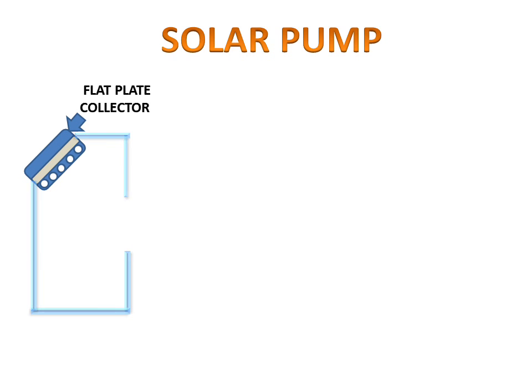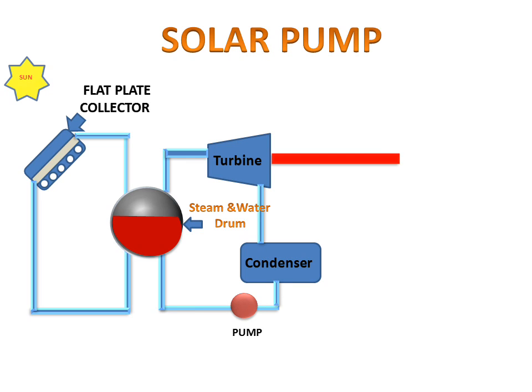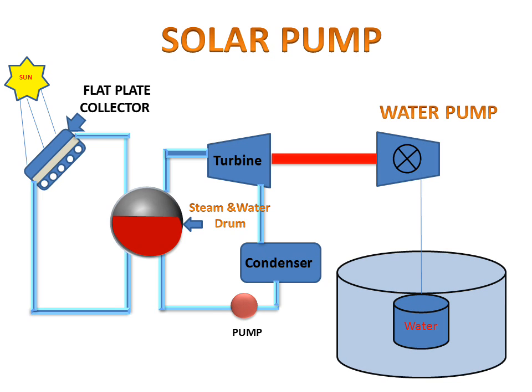We have a flat plate collector and connected pipes with a steam and water drum. Turbine, condenser, pump are connected with the steam and water drum. And turbine is connected with a water pump.